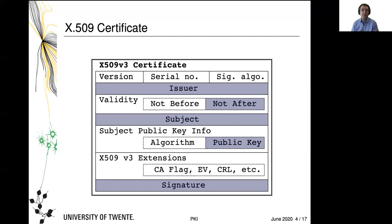There are also a few things used for extending the certificate. You can have a flag indicating that the certificate is meant to represent a CA. There is also extended validation (EV), which we will talk about later, and CRLs, which we will also discuss. The public key is stored in a data structure called Subject Public Key Info — if you want to extract it from the certificate, that is the data structure you are looking for.